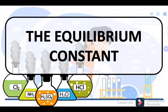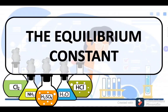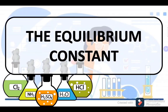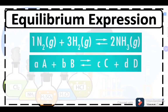Now let's proceed with the equilibrium constant. We are going to take into consideration reversible chemical reactions as they achieve chemical equilibrium, and we are going to solve the equilibrium constant of those reversible chemical reactions.